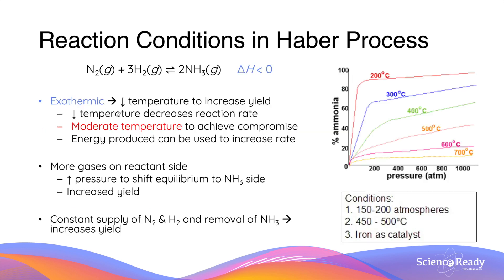The yield of ammonia in the Haber process can be increased through a few ways. The Haber process is an exothermic chemical reaction and as we discussed earlier, if we want to increase the yield of the product of an exothermic reaction, we want to reduce the temperature. However, if we reduce the temperature, this will negatively affect the reaction rates.